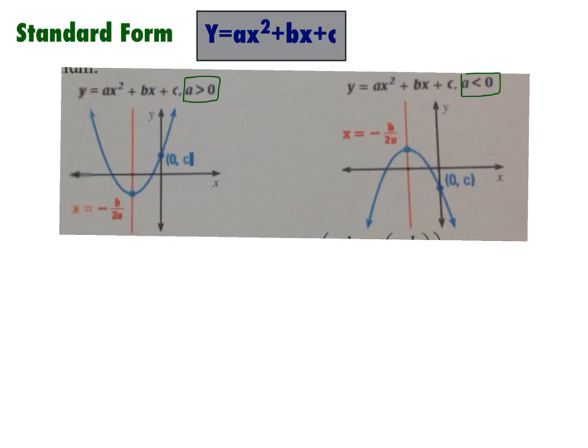In a happy parabola, your vertex, which is right here, is your minimum. But in a sad parabola, your vertex, which is right here, is your maximum.